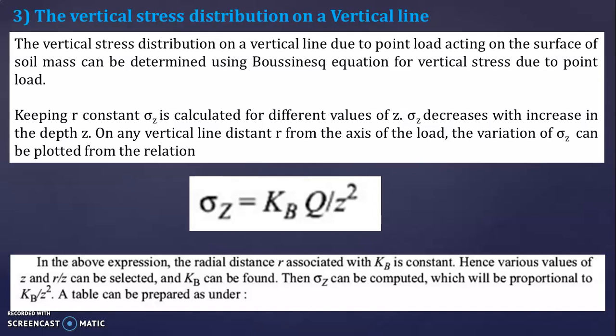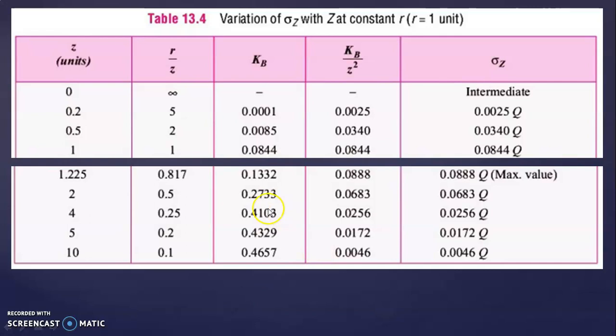Sigma Z can be computed, which will be proportional to KB divided by Z squared. In the previous case, vertical stress distribution on a horizontal plane, Z was kept constant. But here in this case, for vertical stress distribution on a vertical line, R is constant with different values of Z. Now you can see this table — variation of sigma Z with Z at constant R.